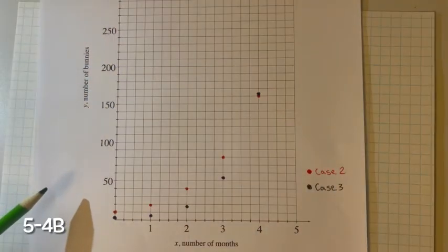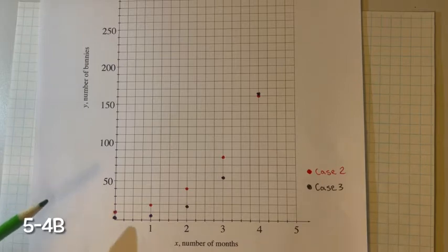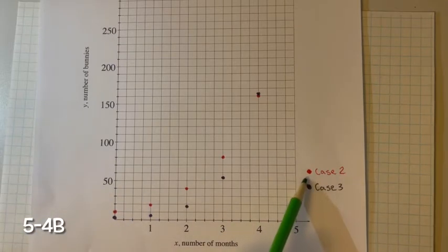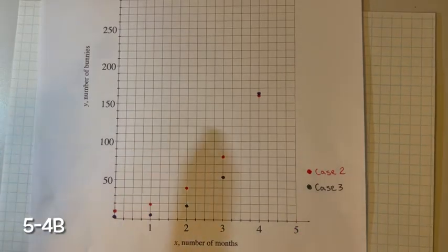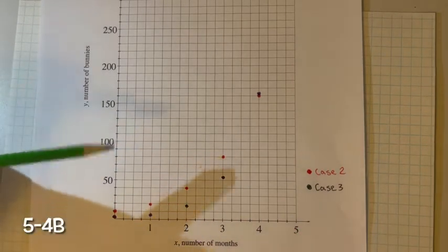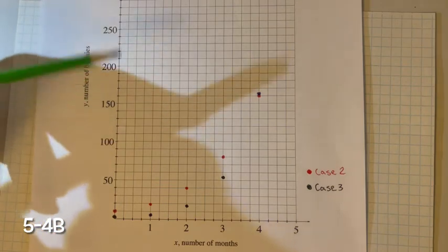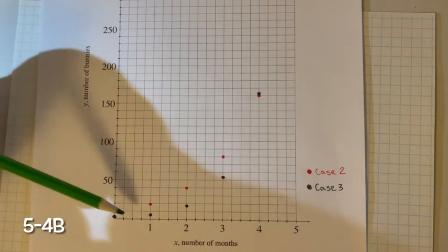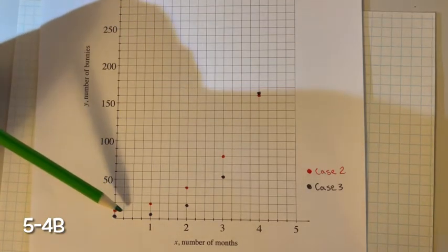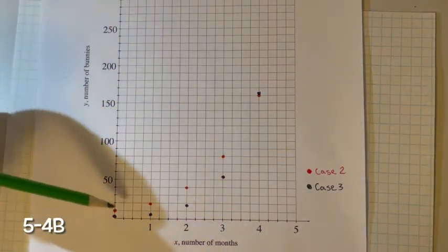For problem 5-4b, we need to graph the data from case 2. In red is case 2, and in black is case 3. I did both of them because I want to show you the difference of what exponential growth looks like as the multiplier or rate changes or increases.